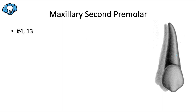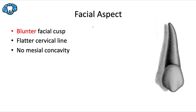This tooth has a lot of similarities to the maxillary first premolar. Like we did with the mandibular central versus the mandibular lateral incisor, we're going to focus mostly on the differences. For the facial aspect, the facial cusp is more blunted than it was in the first premolar. Cusps are generally getting less and less sharp as we go posteriorly from the canine to the first premolar, then the second premolar, and even more so with the molars.